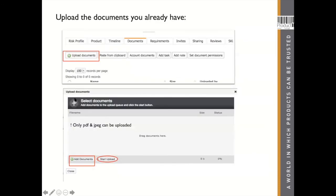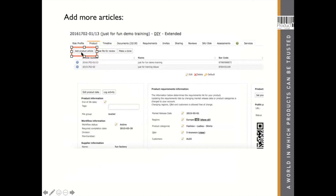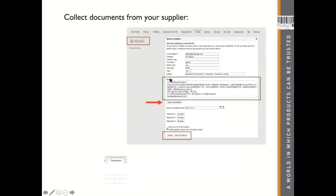Once you have created your technical file and chosen a provisional category, add any extra documentation — a picture, manual, or extra info about your product — to make it easier for my colleague. Add articles to your technical file for different shapes, colors, etc., giving you multiple articles in one file. Then send out the invite to your supplier: go to the invite tab, click 'Invite User,' fill in the supplier information, add a message, select the documents you want to receive, and send the invitation — an email will be sent to your supplier.